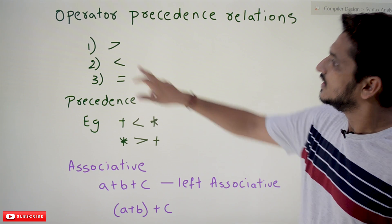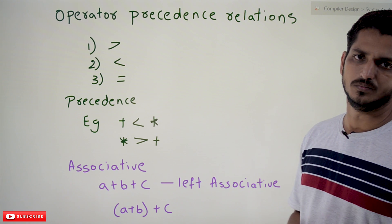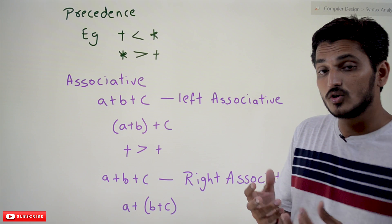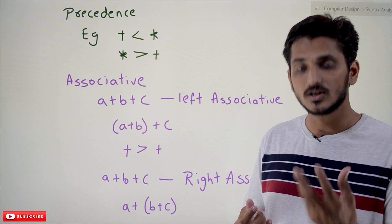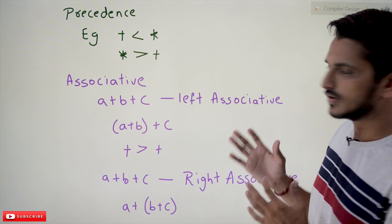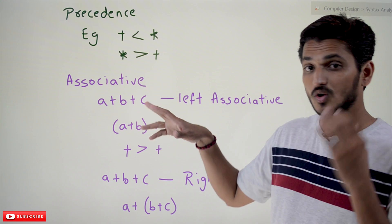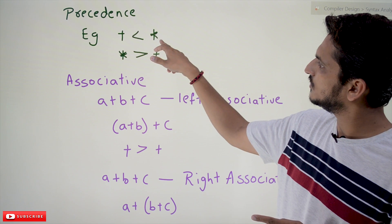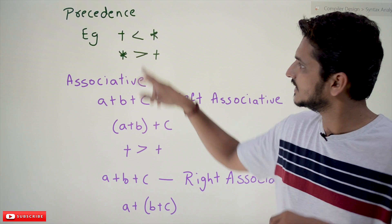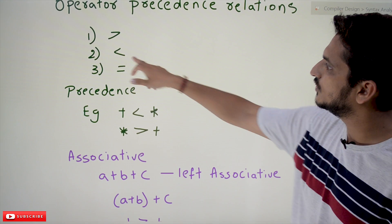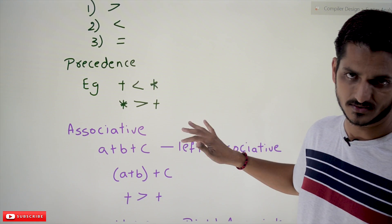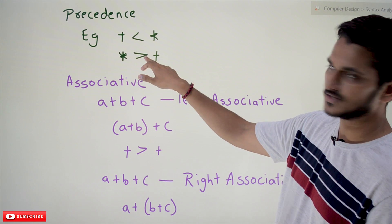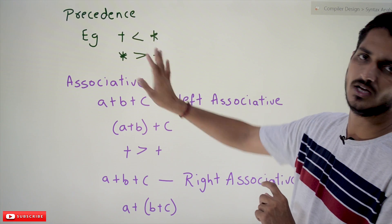The relations are greater than, less than, and equal to. You will understand these relations step by step through an example. Assume we are doing operator precedence parsing for the expression a + b * c. Precedence should be followed: plus has less precedence compared to star, so we write plus < star. Star > plus means star has higher precedence — that is the meaning of these relations.